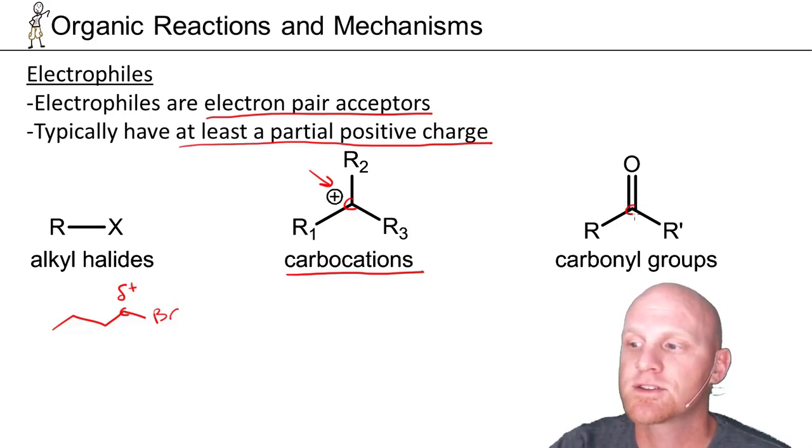The last one here is this carbonyl carbon, and this carbonyl carbon also has a partial positive charge. Notice the big fat dipole moment for that carbon-oxygen double bond. That carbonyl carbon often ends up being a great electrophile as well. All of our electrophiles here generally are electron-deficient and have at least a partial positive charge, if not a full positive formal charge.